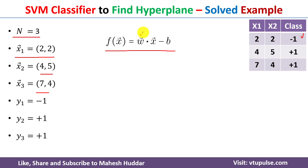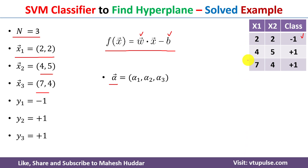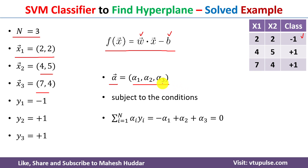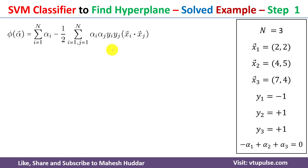We need to find the values for the weight vector and the bias, since the input vectors are known. To calculate the weight vector and bias, we first need to calculate the alpha vector. The alpha vector is the set of variables based on the number of input vectors — here three input vectors means we need to calculate three alpha values: α1, α2, α3. The conditions are: the summation of αᵢyᵢ must equal 0, and all alpha values must be greater than 0.